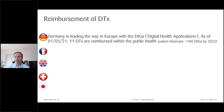Germany is leading the way in Europe with the DiGA — digital health applications. The Digital Healthcare Act coming into force in late 2019 marked the introduction of 'apps on prescription' for patients. Approximately 73 million people covered by German statutory health insurance are entitled to use a DiGA prescribed by a physician or psychotherapist, reimbursed by health insurance. As of early March, 11 DiGAs are reimbursed within the public health system, and we forecast more than 100 by 2025.